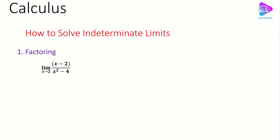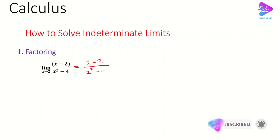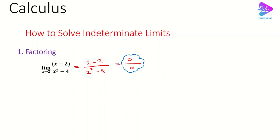The first approach is the factoring approach. For the factoring approach I'm going to discuss one example. As you can see, we have the limit of (x minus 2) over (x squared minus 4). The first approach for solving any limit is to plug in the value we are approaching, which is 2. So we get 2 minus 2 over 2 squared minus 4, which gives 0 over 0 — an indeterminate form.